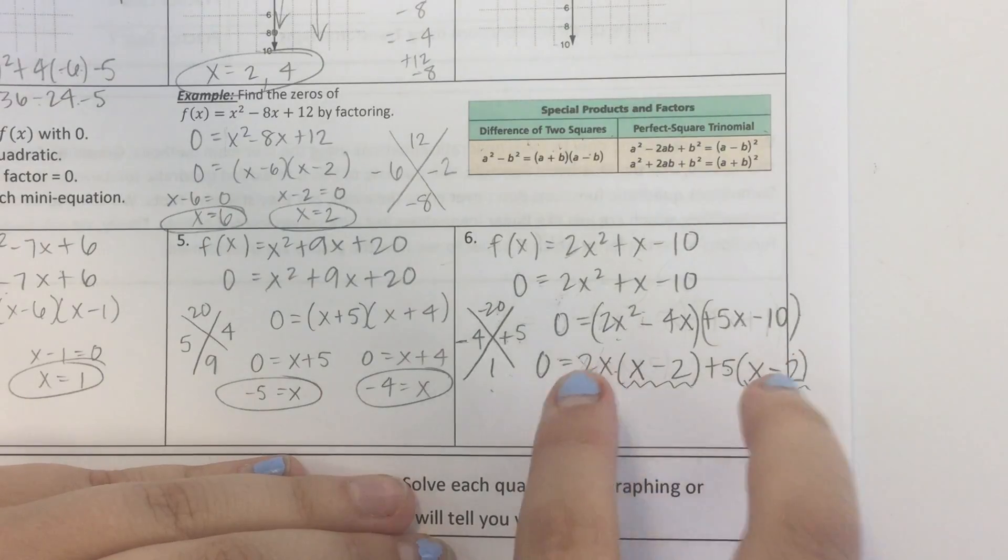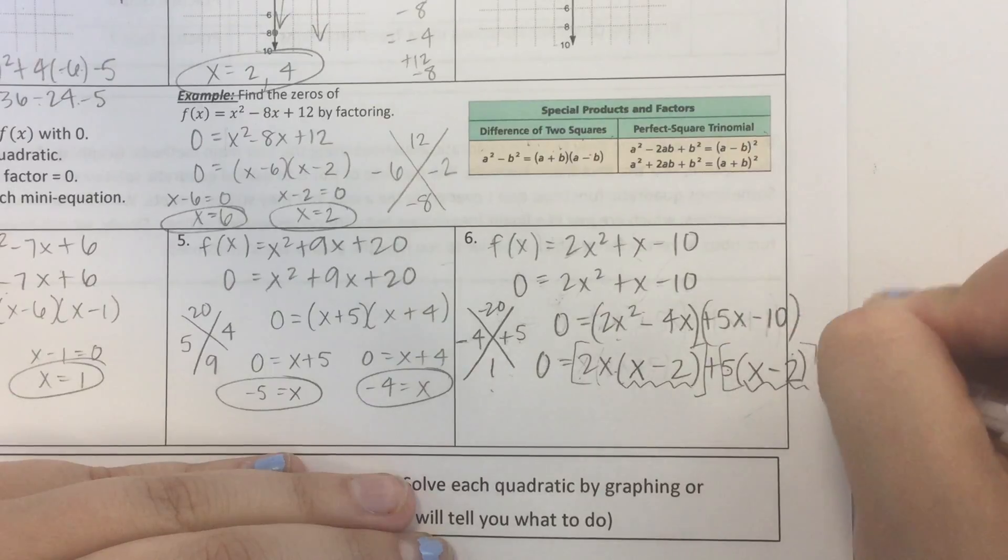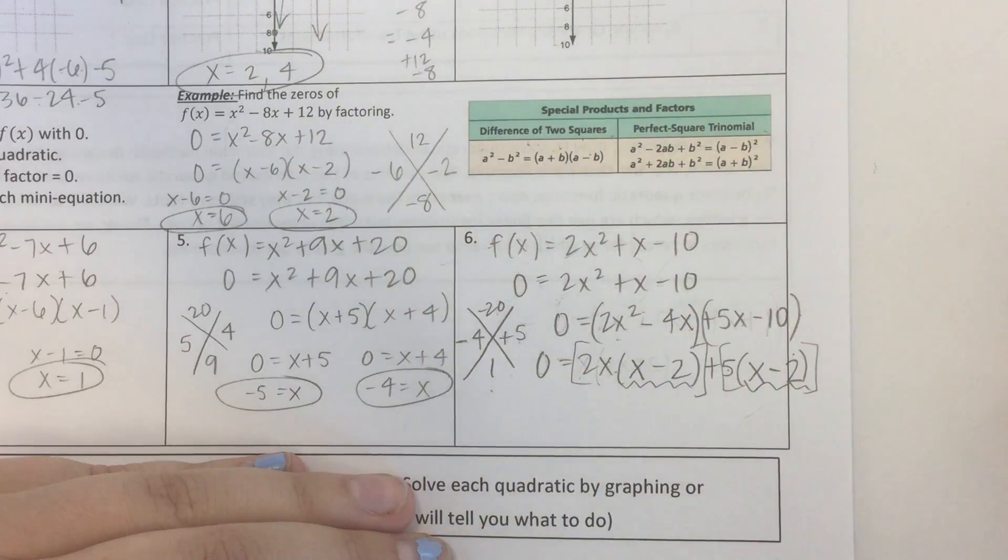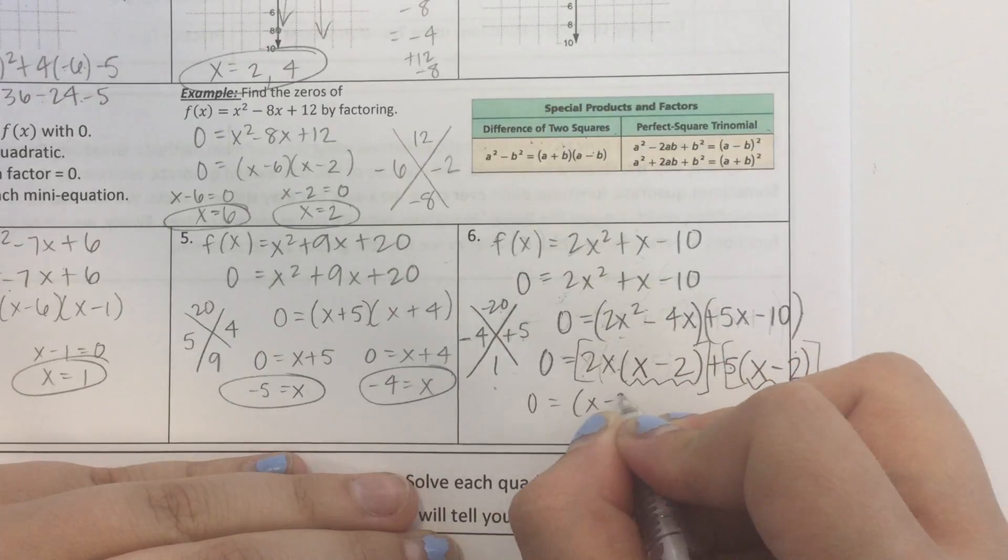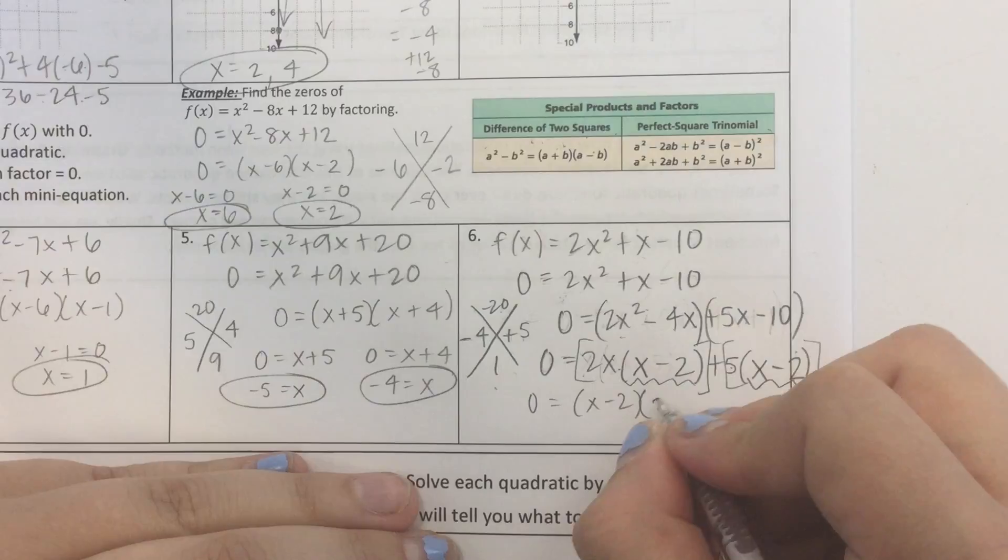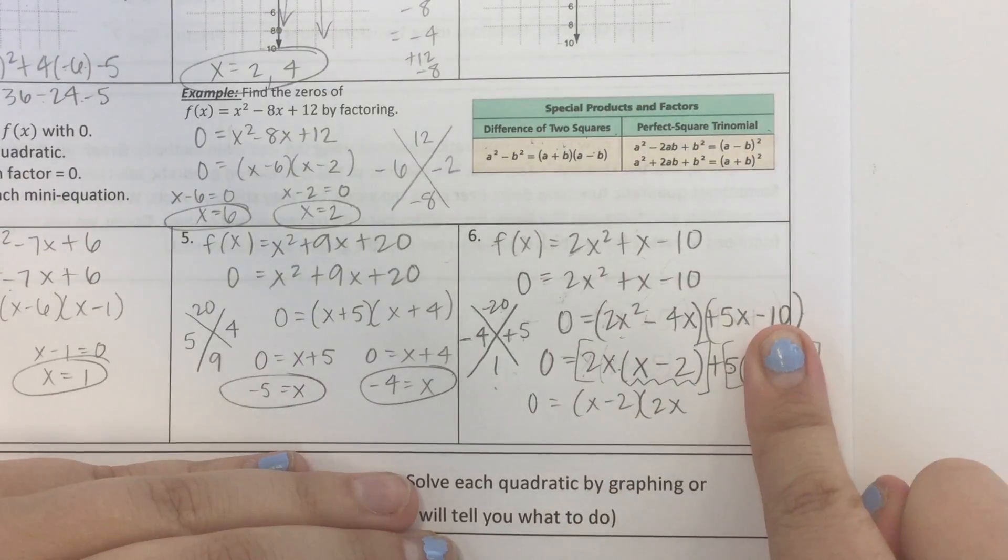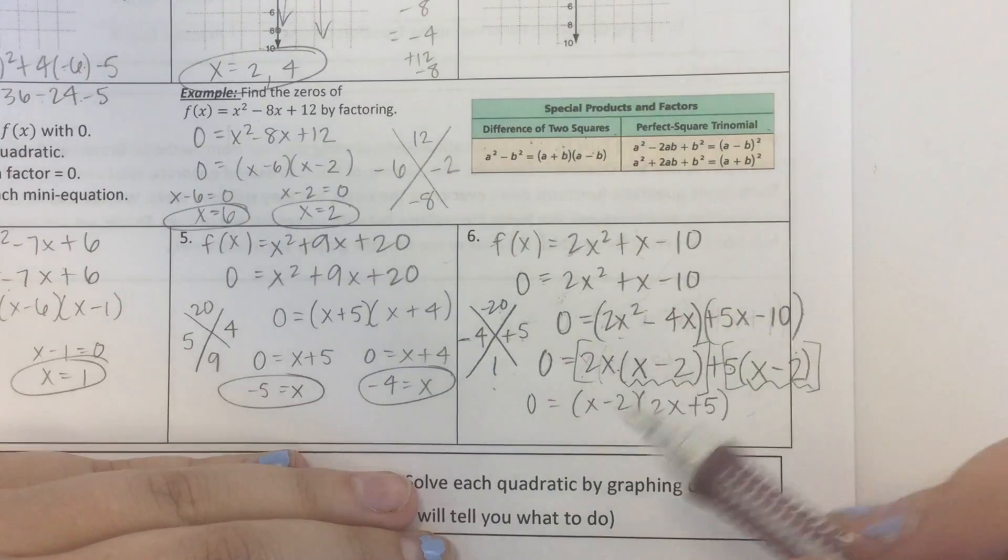So, since both of these two blobs have an x minus 2 in them, I can factor that out. So, I have 0 equals x minus 2. If I take away the x minus 2, I'm left with 2x. Take away the x minus 2, I'm left with plus 5. And we're done. We're factored.